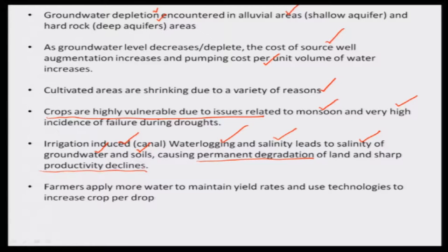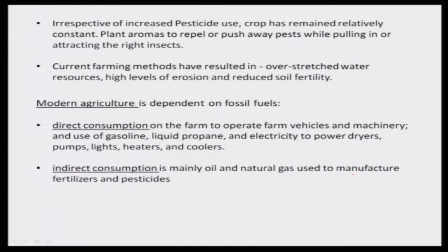To overcome these issues, some farmers follow shortcuts — applying more water thinking everything will get washed off to maintain yield rates. Technologies that increase crop productivity per drop of water are needed. Practices like plant aromas to repel or push away pests are being used nowadays.